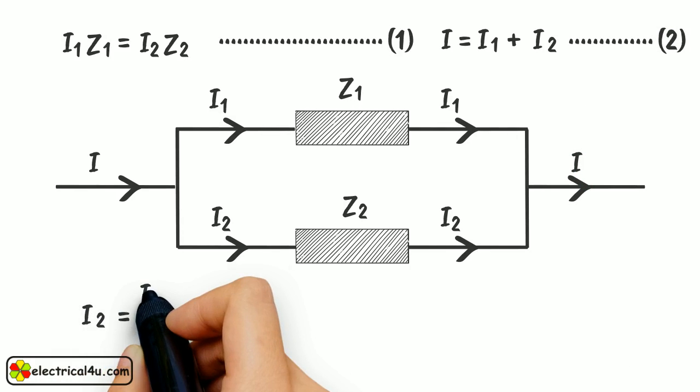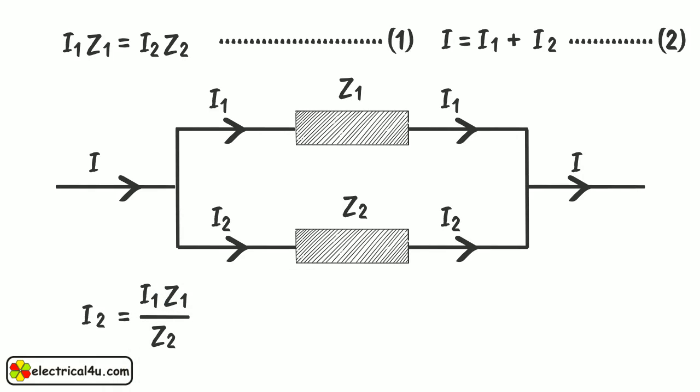From equation 1, we get I2 equals to I1 Z1 divided by Z2. Computing this expression of I2 in equation 2, we get I equals to I1 plus I1 into Z1 divided by Z2.